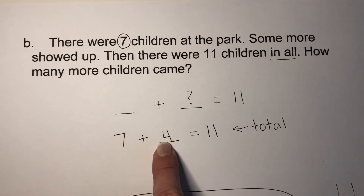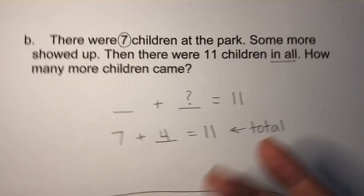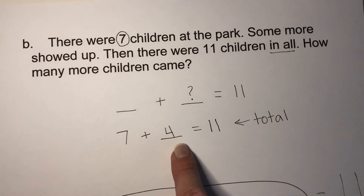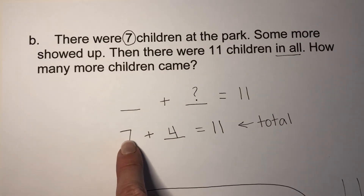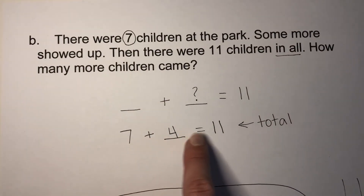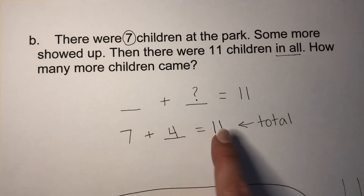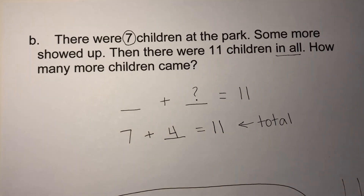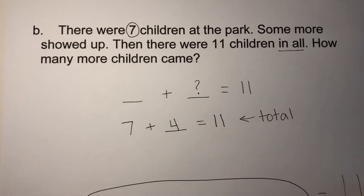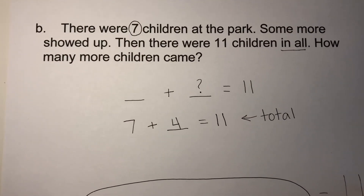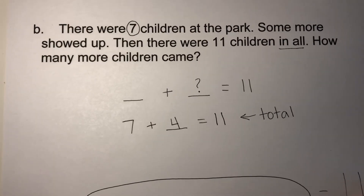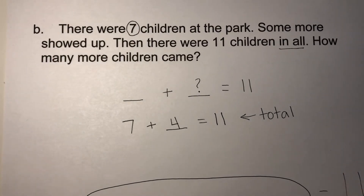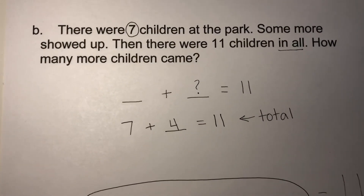So we were missing an addend, but now we have our addend and we can add these together: seven plus four equals eleven. I hope you enjoyed this video, boys and girls. If there's anything else you need me to explain, please have your parent write it in the comments. Thanks so much. Bye.